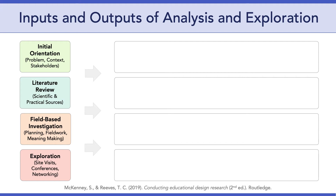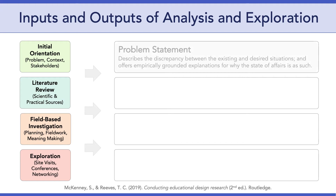Now let's talk about the four outputs of the analysis and exploration phase. Keep in mind that although there are four inputs and four outputs, there isn't a one-to-one correspondence — all of the inputs should shape and influence all four outputs. The first output is the problem statement. A problem statement describes the discrepancy between the existing and desired situations and offers explanations for why that discrepancy exists. Ideally, your problem statement will be descriptive, explanatory, and accurate.